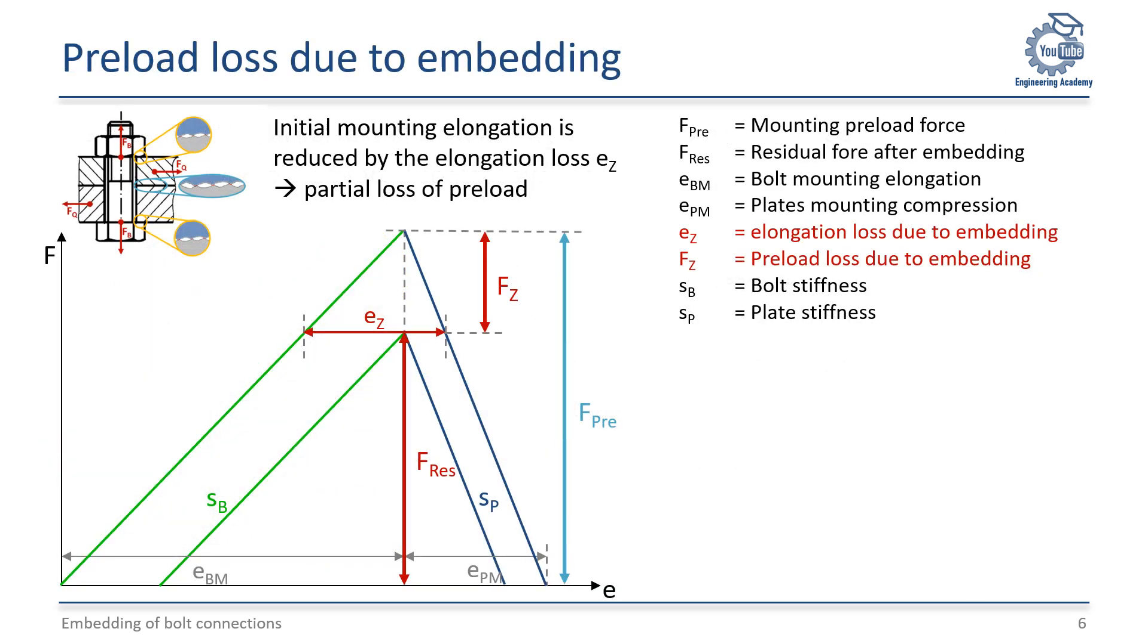To estimate the preload loss, we revisit the joint diagram in the assembly condition. The assembly preload force FPRE is applied. The bolt is stretched by the amount EBM and the plates are compressed by the amount EPM. If now embedding occurs and the roughness peaks decompress by an amount EZ, the preload in the bolt and plate decreases and a new clamping diagram is formed. The remaining residual force after embedding is FRES.